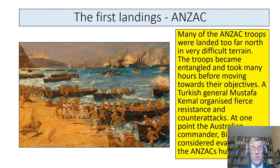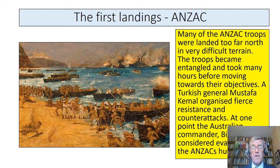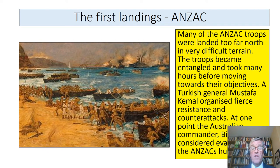The Australian and New Zealand Anzac troops landed further north in a separate place. A number of mistakes were made — they landed too far north in very difficult terrain. The troops became mixed up and it took quite a long time before they could reach their objectives. A Turkish general called Mustafa Kemal organized fierce resistance and counterattacks. At one point the Australian commander Birdwood considered evacuation, but they hung on.